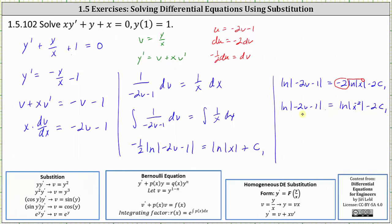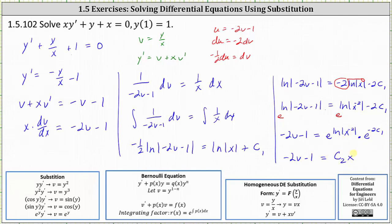Now we will exponentiate both sides of the equation with the base of e. We will also drop the absolute value. The left simplifies nicely to just negative two v minus one. On the right, we can write it as e to the power of natural log absolute value of x to the power of negative two, times e to the power of negative two times c sub one. Since e to the power of negative two c sub one is just some constant, which we'll call c sub two, and e to the power of natural log x to the power of negative two simplifies to x to the power of negative two, giving us negative two v minus one equals c sub two times x to the power of negative two.